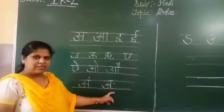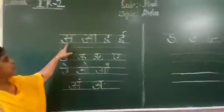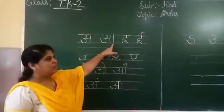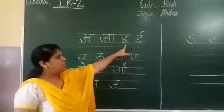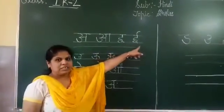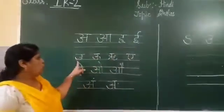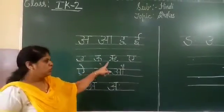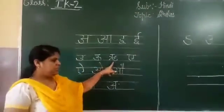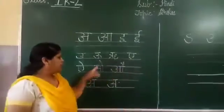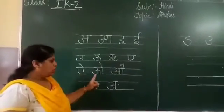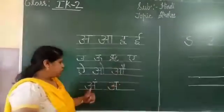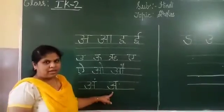Aha, again I say children: A, A, A, I, I, U, U, R, E, I, O, Au, Am, Aha.